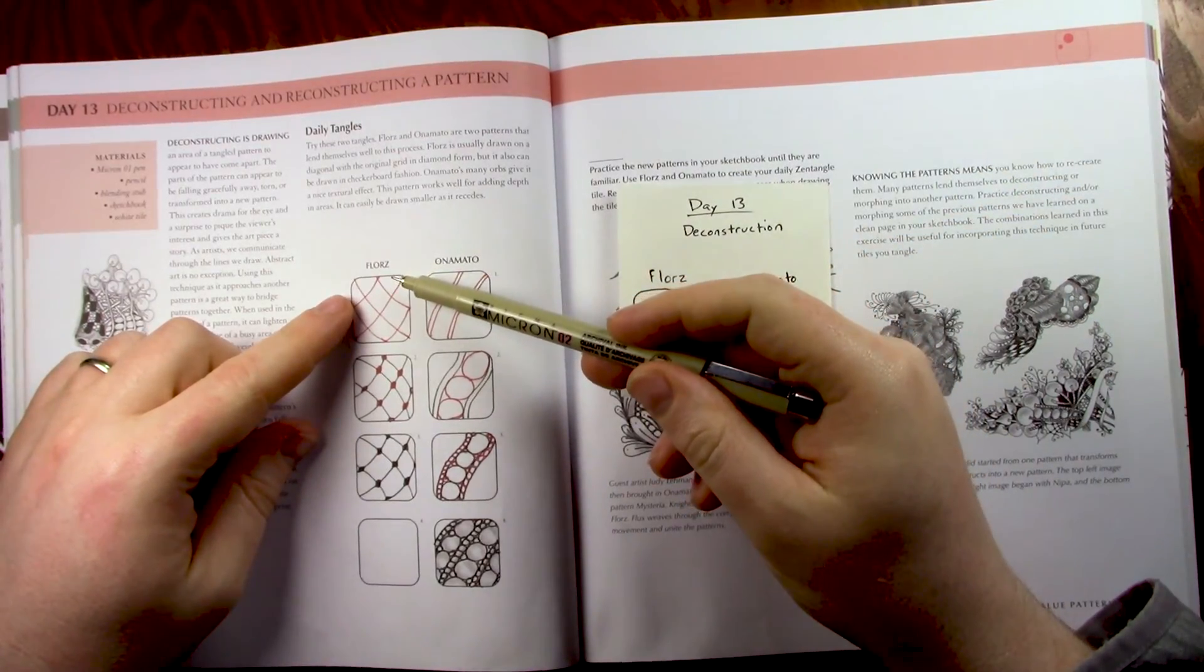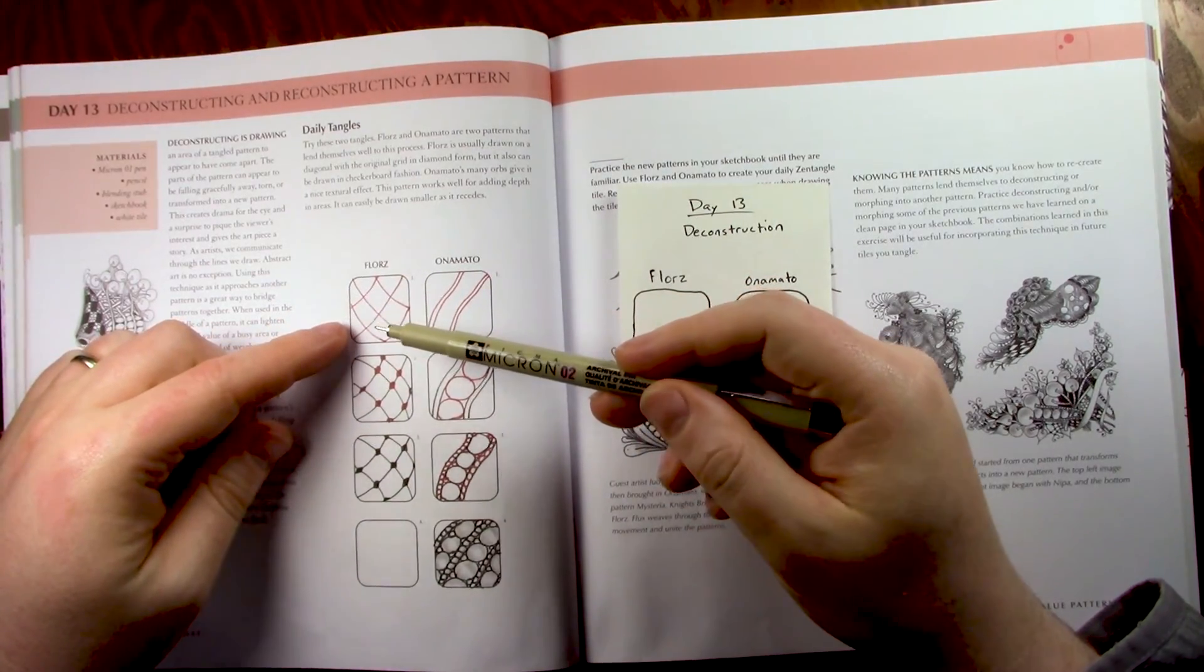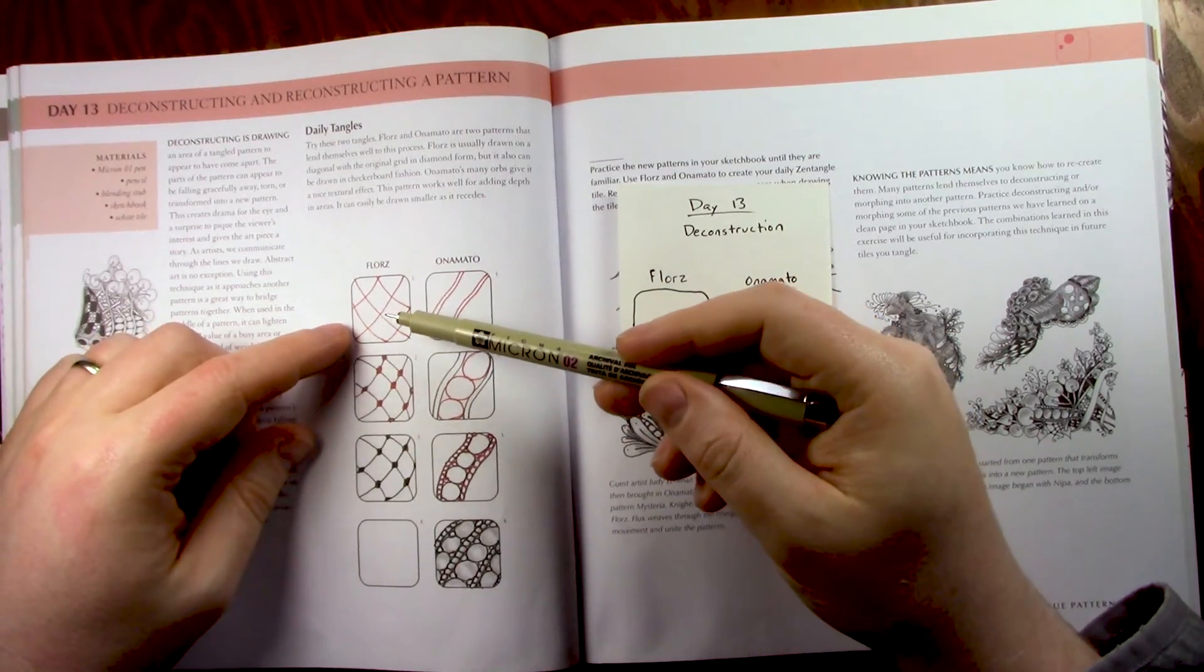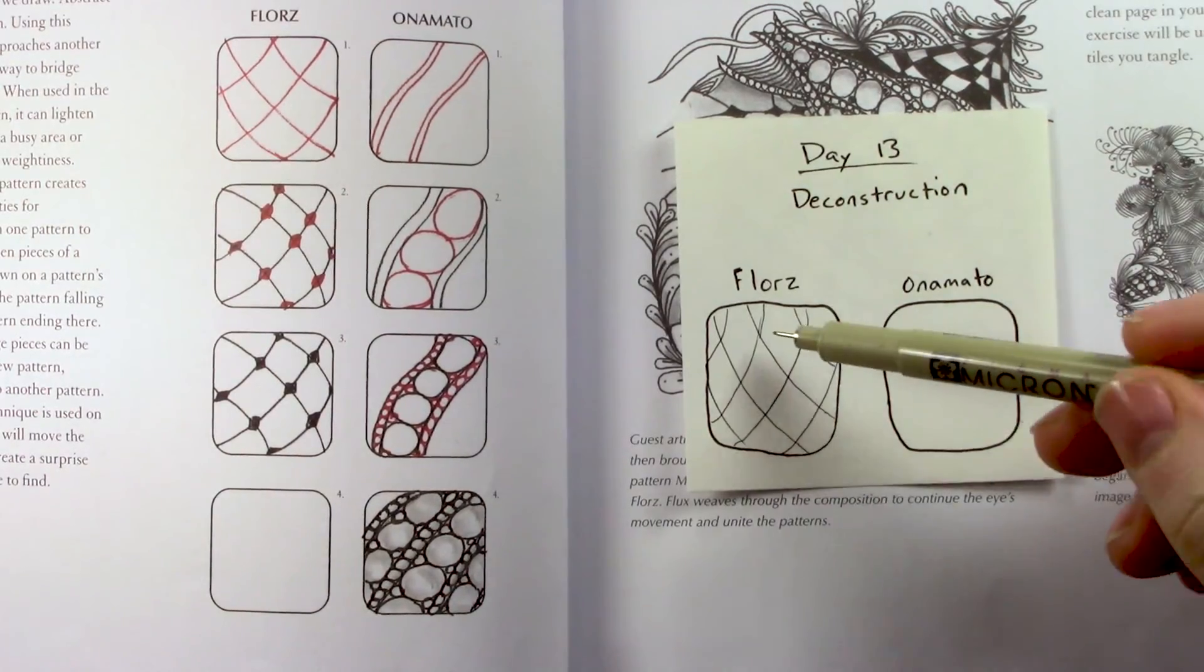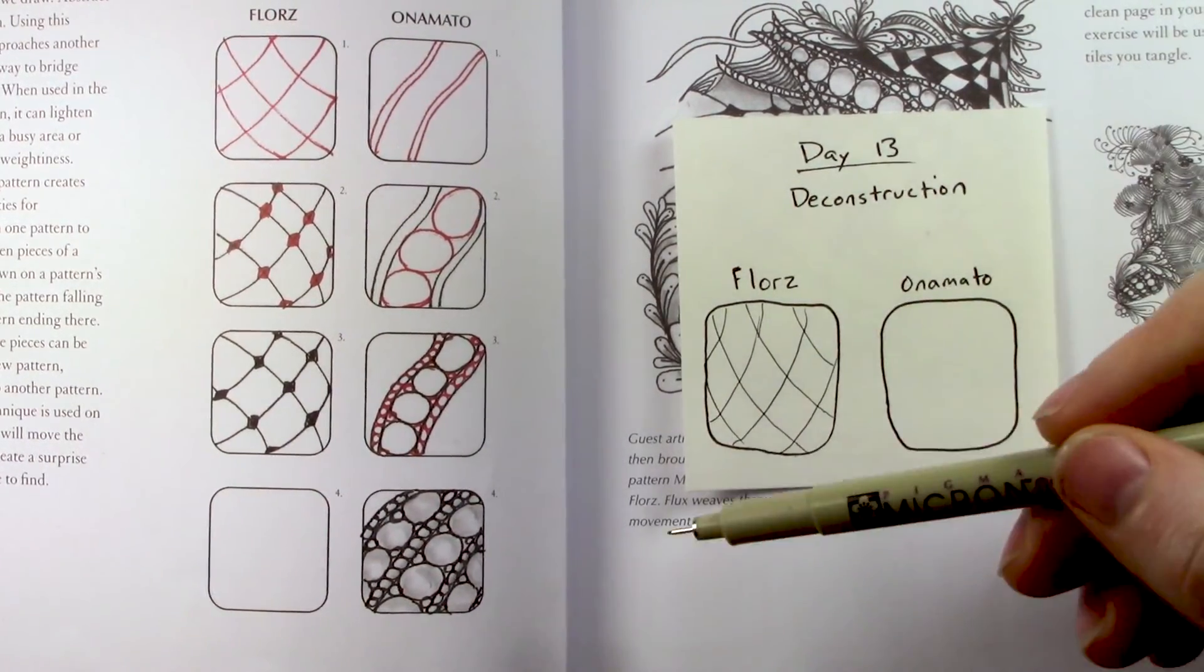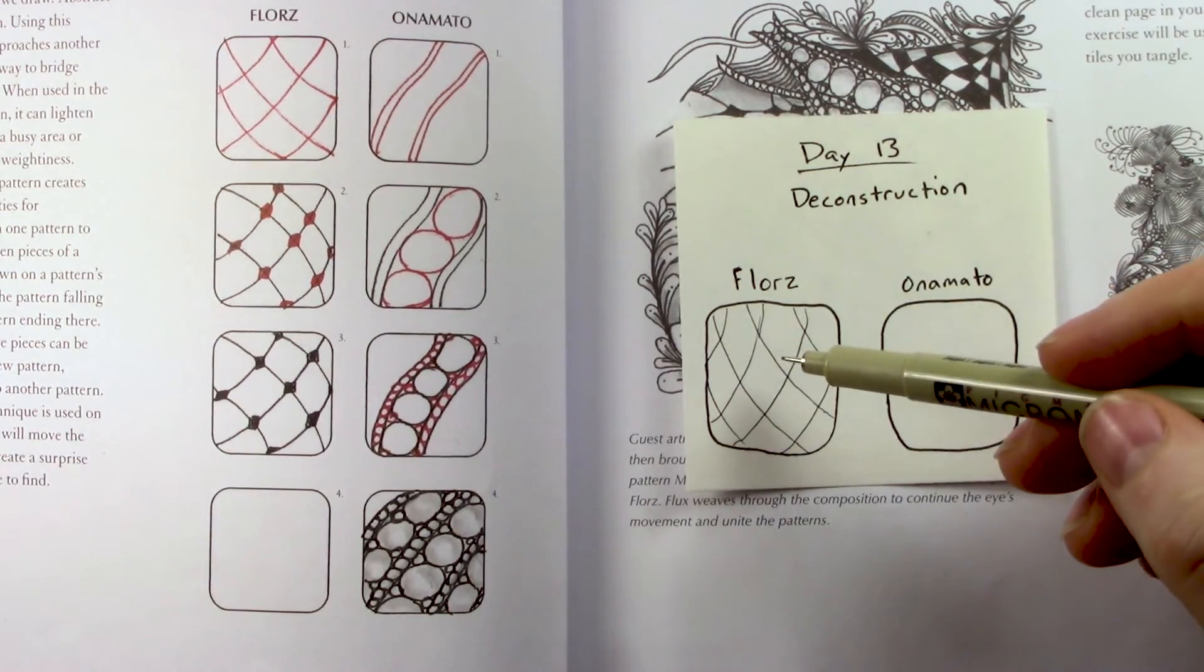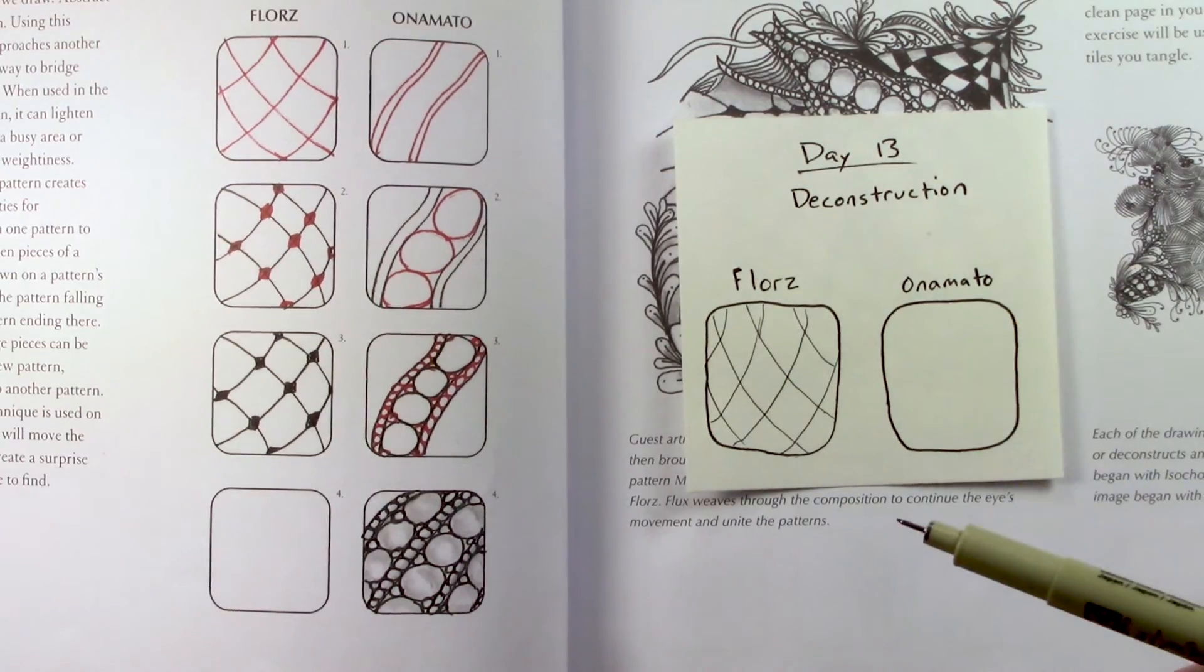Let's get started with Floors, which is another pattern that uses this diagonal grid as a base. We've got lots of patterns that do that. If you're still not familiar with how to make that underlying diagonal curvy grid, go back to yesterday, day 12's video, and I made three different patterns using it there.